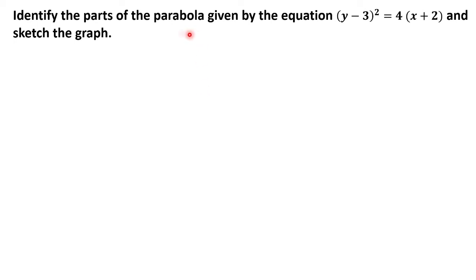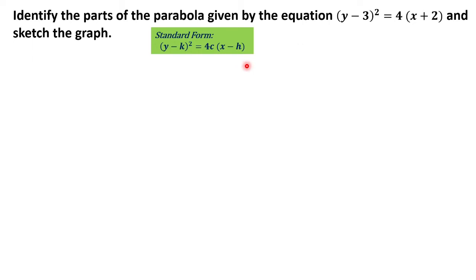For this example, we will be getting the parts of the given parabola given by the equation squared quantity of y minus 3 is equal to 4 times the quantity of x plus 2. This follows the standard form wherein the opening of this parabola is to the right. The parabola is facing to the right if the squared variable is y and 4c is positive.